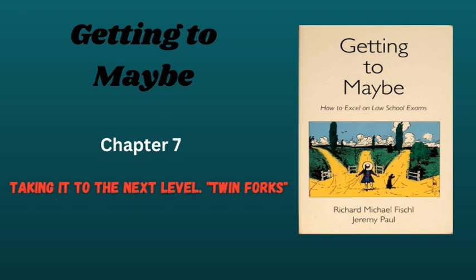The classic issue-spotter question on law exams has multiple links like this, and in our experience students needlessly miss the second and third and fourth links because they think they are through when they identify the first one. We discuss this common mistake at greater length in Part II of the book. But you can avoid that problem by learning to recognize this linked-forks pattern and looking for it on your exams.